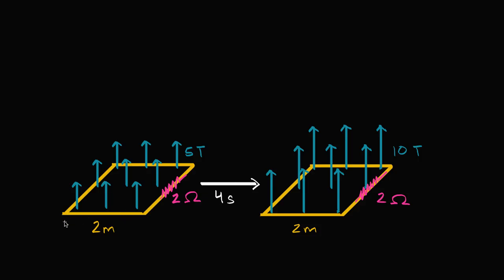We have something interesting going on. I have this ring of conductor right here — this square ring. It has a resistance of two ohms. We see that it is two meters by two meters, so the area of this ring would be four square meters. We see a magnetic field going through the surface defined by the ring, and it's constant — a constant magnetic field of five teslas, going exactly perpendicularly to the surface of the ring.